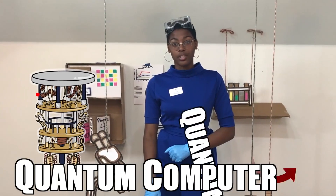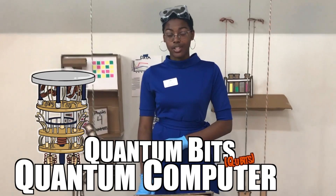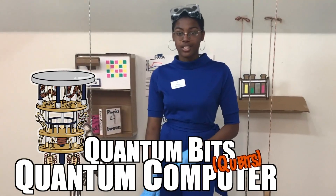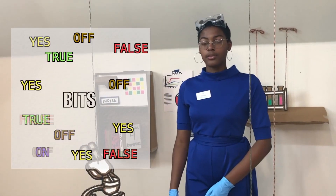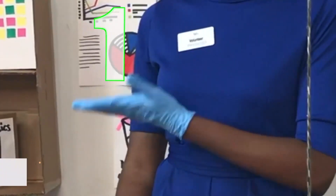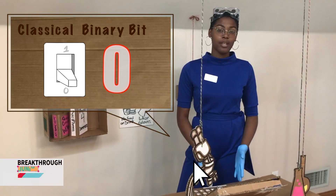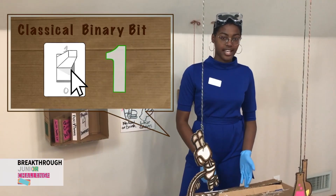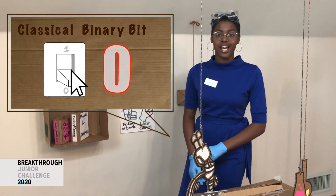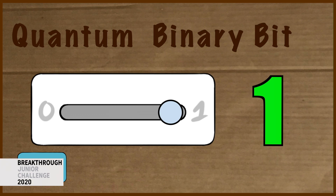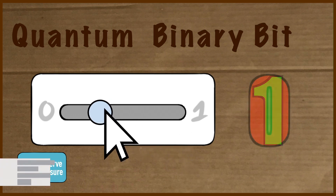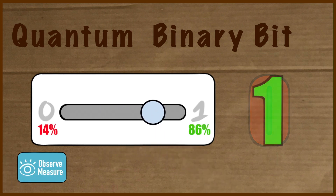Unlike classical computers, these use quantum bits, or qubits for short. A bit is a unit of information with two states, often represented as one or zero. Whereas a classical bit must be in either state at any given time, a qubit state can be any proportion of the two states, being some degree of both at the same time. This intermediary state is called a superposition.